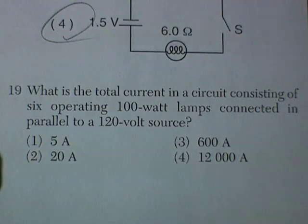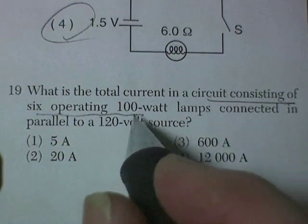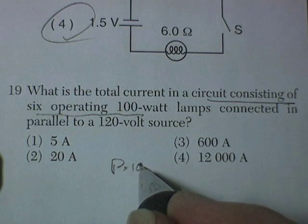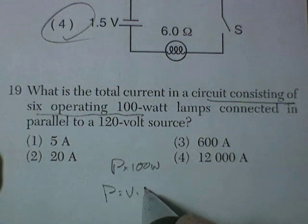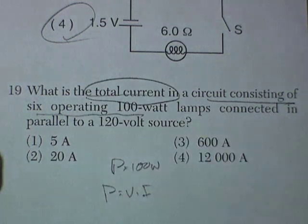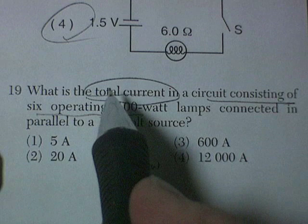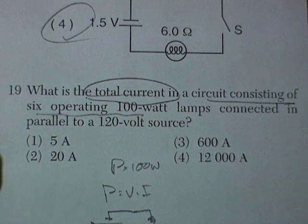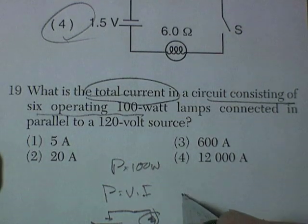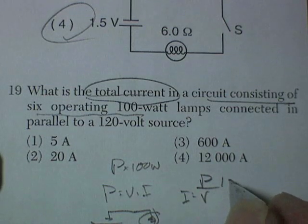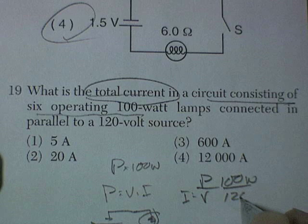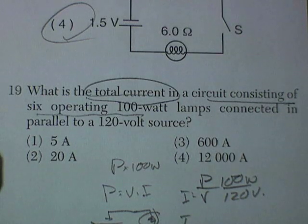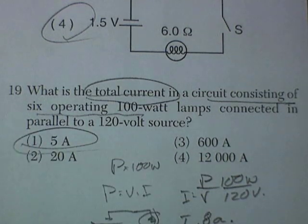Question 19, what is the total current in a circuit consisting of six operating 100 watt light bulbs? So the power is 100 watts, power equals voltage times current. I want to know the total current for six of them in parallel. Well, let's do the current of one of them functioning. So I've got 120 volts running through a light bulb, it's 100 watts. The current would be power divided by voltage, so 100 watts divided by 120 volts, gives me a current of about 0.8 something amps, and then I multiply that by six of them, so that would be a total current of about 5 amps.